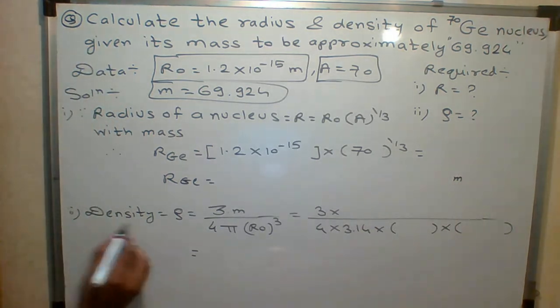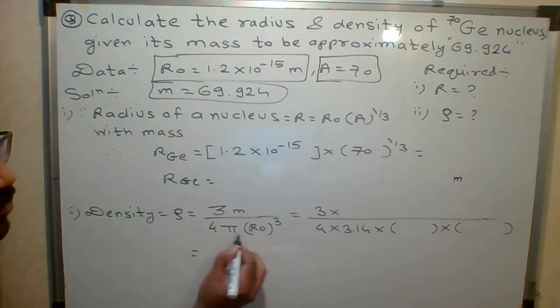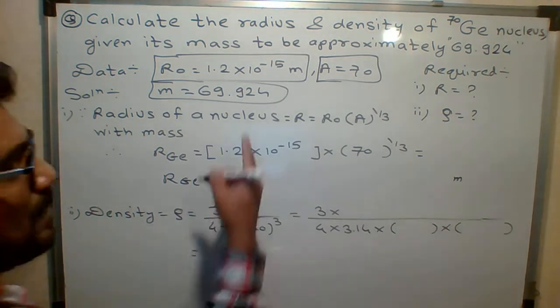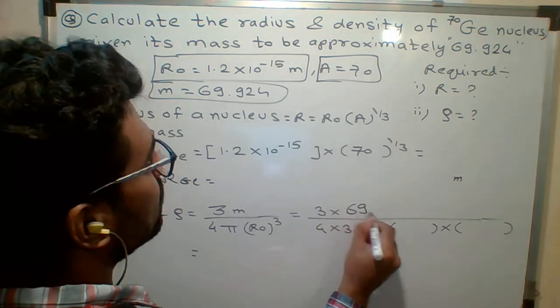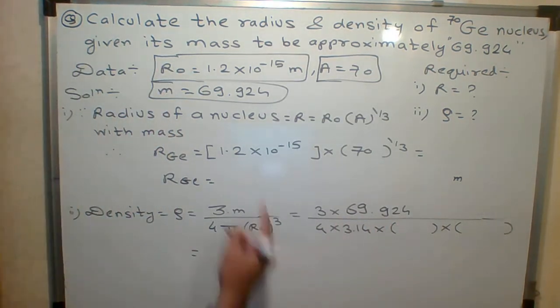Next, density. We derived the density formula, which is given by 3M/(4πR0³). M is given as 69.924. Pi value is 3.14, and what is R0?